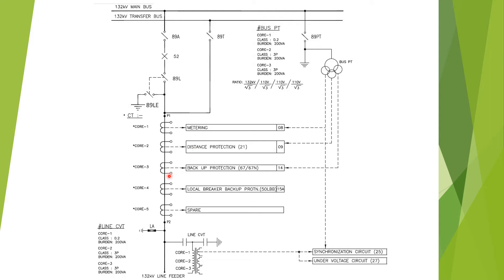This feeder can take power from the main bus or from the transfer bus. For taking from the main bus, 89A, 89L, and 52 shall be closed. For taking power from the transfer bus, 89T shall be closed. In the substation, the bus coupler or bus transfer bay shall be closed — that is, the main bus is coupled with the transfer bus.